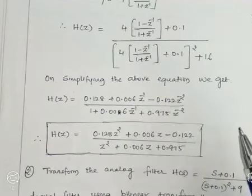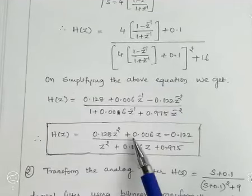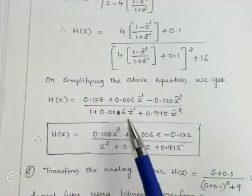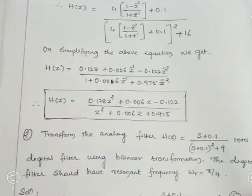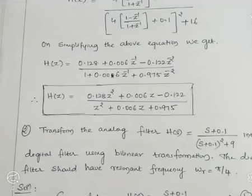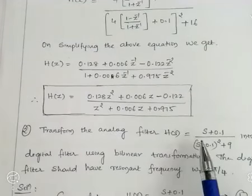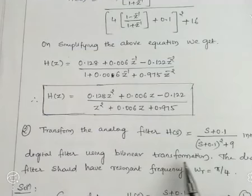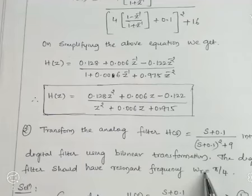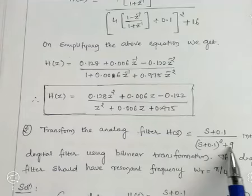The above equation can also be expressed in positive powers of z by multiplying numerator and denominator by z². As a homework exercise, transform the analog filter H(s) = (s + 0.1) / [(s + 0.1)² + 9] into a digital filter using bilinear transformation, where the digital filter should have resonant frequency ω_r = π/4. The changes from the solved example are: 16 is replaced by 9, and the digital resonant frequency is π/4 instead of π/2. Write your answer in the comment box.